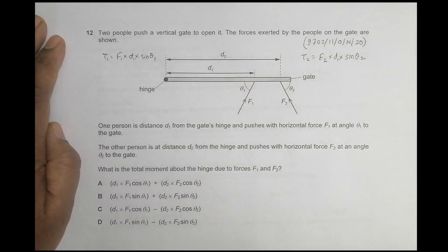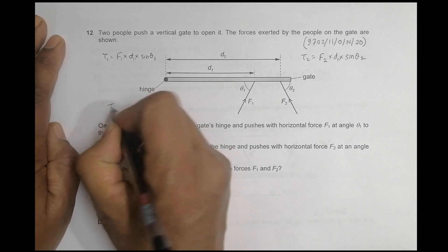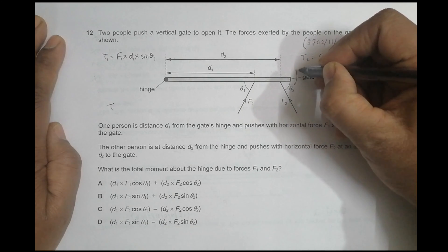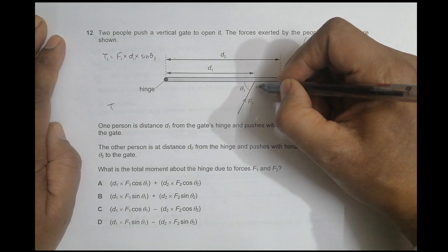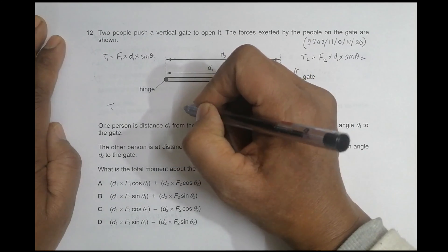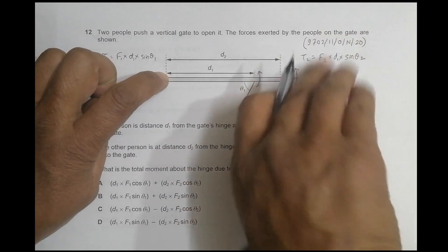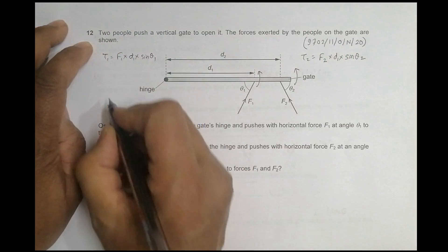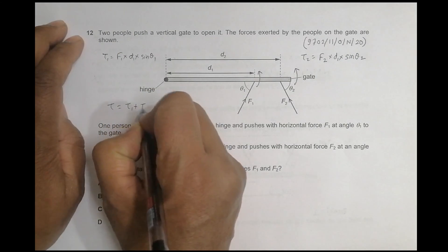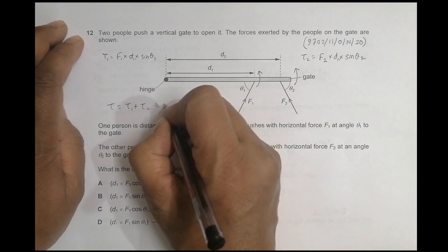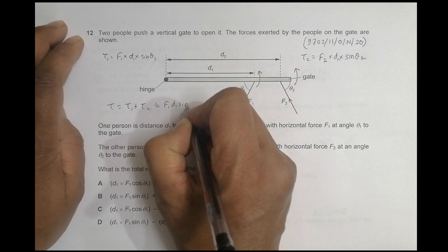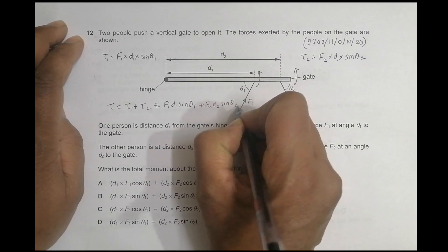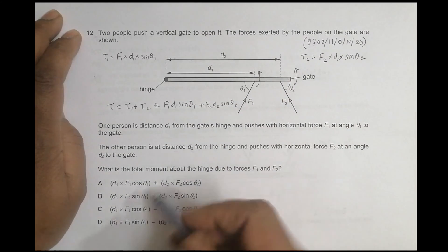Both torques will move the gate in the anti-clockwise sense, because the fulcrum is at one end and the forces are applied outward. So the total torque will be tau 1 + tau 2 = f1 × d1 × sin(theta 1) + f2 × d2 × sin(theta 2).